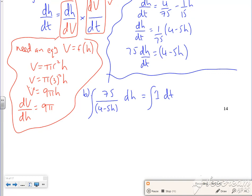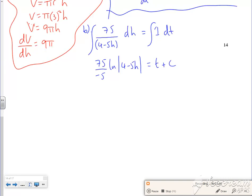Right then, what I've got is 75, what I want is minus 5, log of whatever's on the bottom, and that's T plus C. So 75 over 5 is 15, is that right? So it's minus 15 log of 4 minus 5H is T plus C.